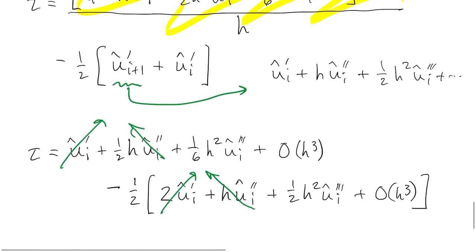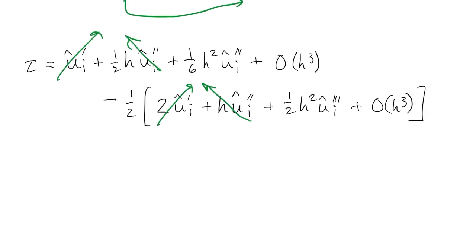Finally we see a bunch of stuff cancels out. And tau starts with constant times h squared times u-hat triple prime. What we really care about here is that the leading power of h is h squared. So we call this a second-order accurate method.